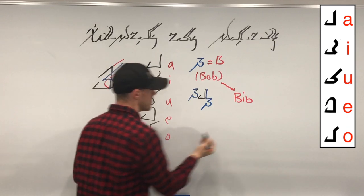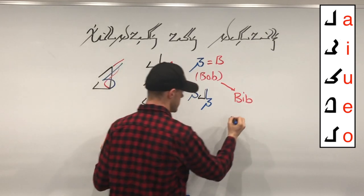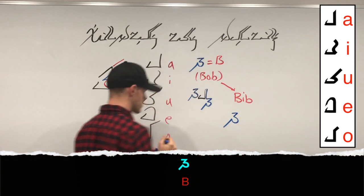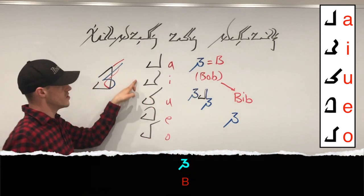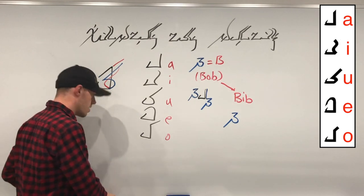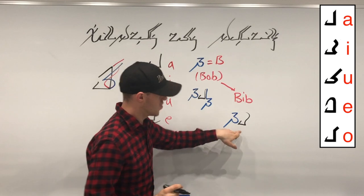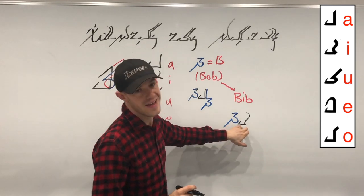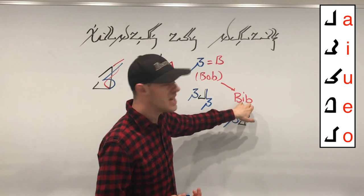So if I wanted to write bib in Nordish, again, I'm going to go back to the consonant B. But this time, we don't use ah, we use e. Well, if I write it with these two letters, this B and I, that creates the sound B. But I want the sound i, bib.